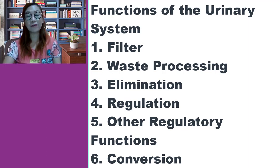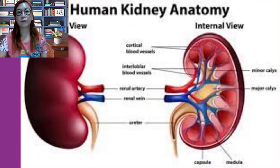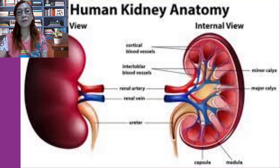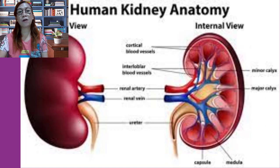In the following slides, I will be discussing the different organs of the urinary system. The urinary system consists of two kidneys, two ureters, a urinary bladder, and a urethra. The kidneys perform the functions just described and manufacture urine, while the other organs provide temporary storage or serve as transportation channels to carry urine from one body region to another.